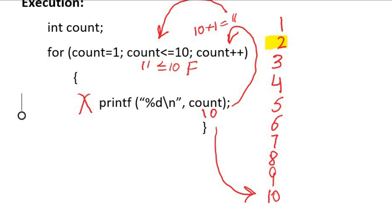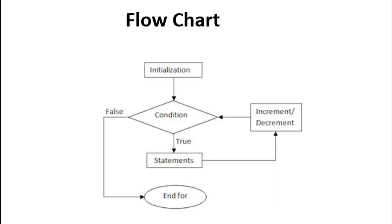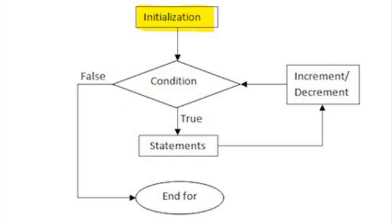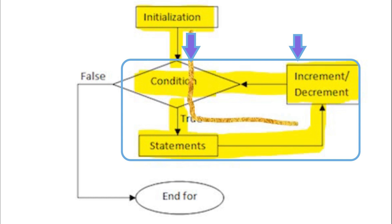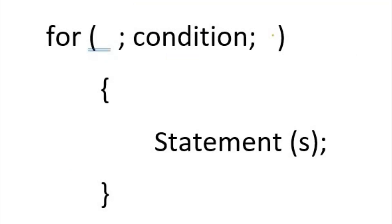Let's see the flowchart of the for loop. The loop starts by initializing the control variable. Then the condition is tested — if true, the body executes, after which control moves to the increment or decrement part and the condition is tested again. This flow continues as long as the condition is true. If the condition is false, the loop terminates.